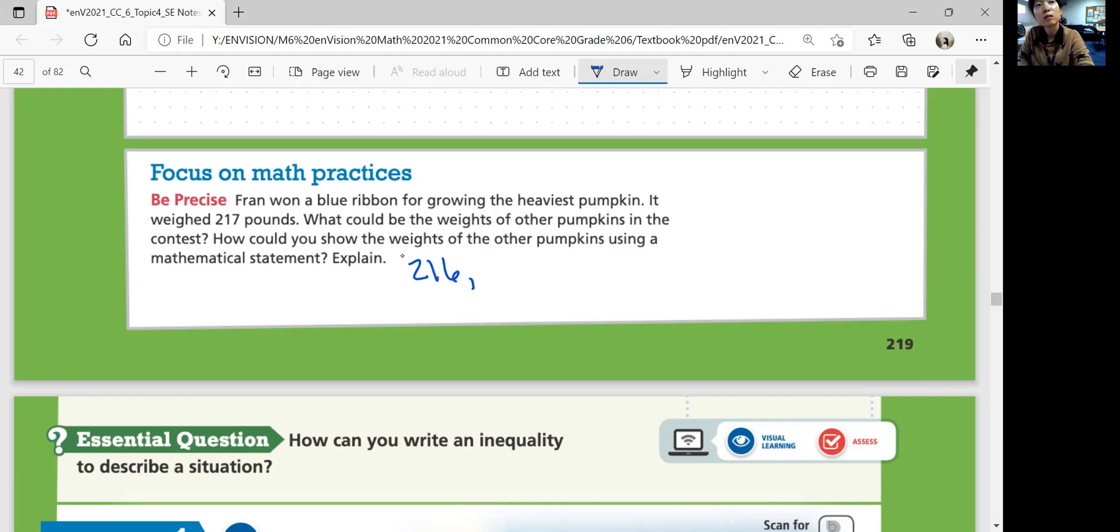216 pounds, 210 pounds, or even 200 pounds. These are other weights and possible weights. Okay? So if X represents all the weights of other pumpkins, X should be less than 217, not including 217.